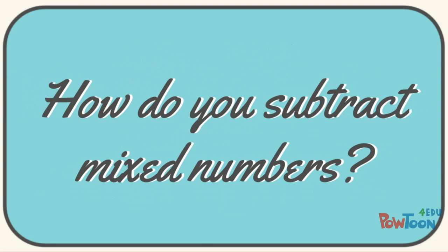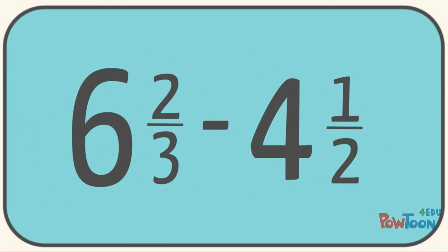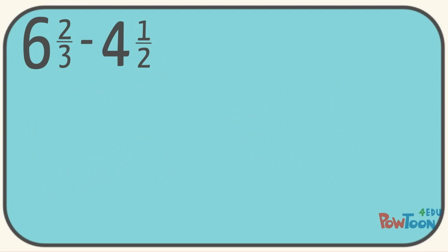How do you subtract mixed numbers? Now this method is a little bit different than adding. So let's take 6 and 2 thirds minus 4 and 1 half. To do this, we must first convert to improper fractions.